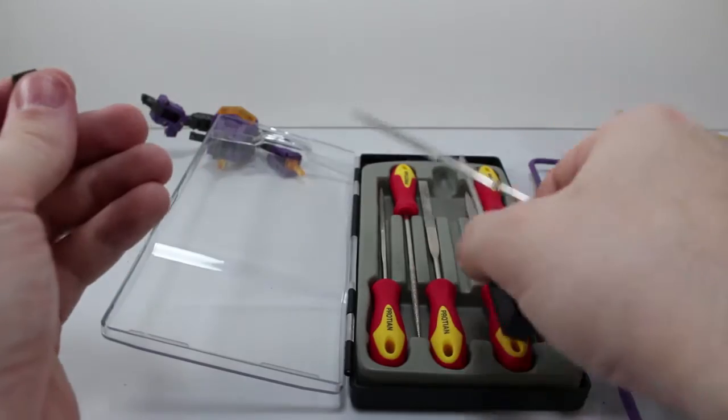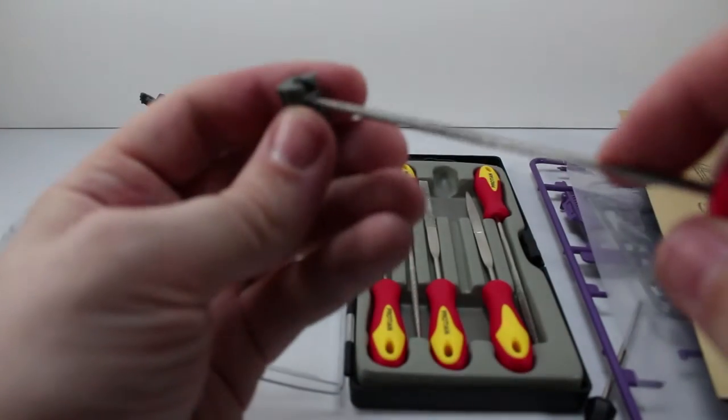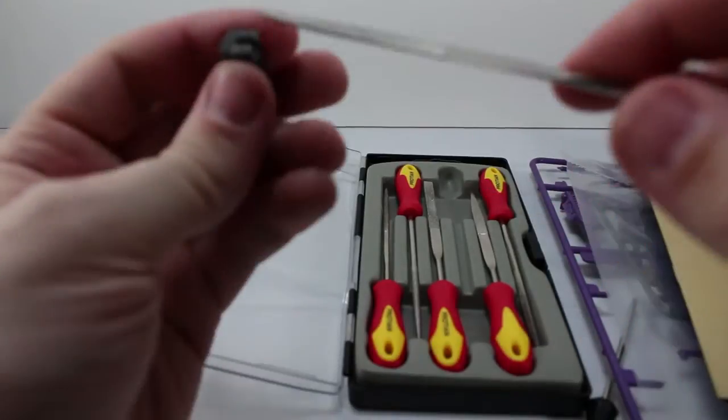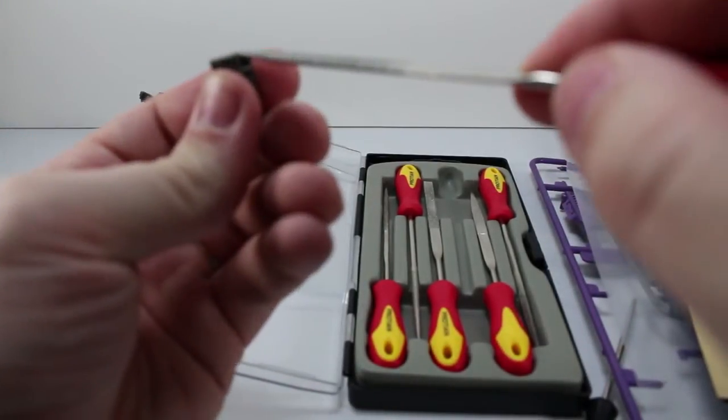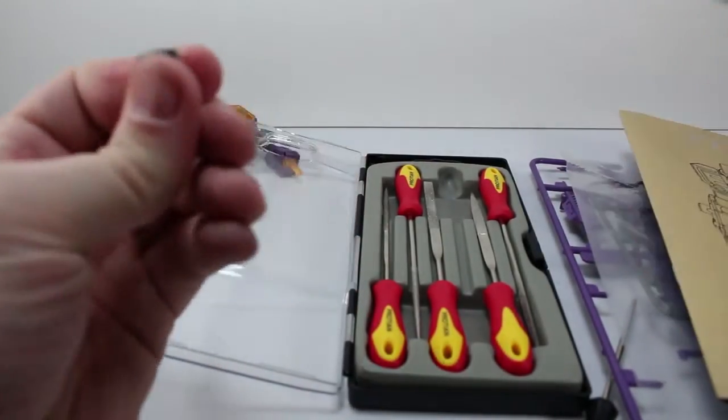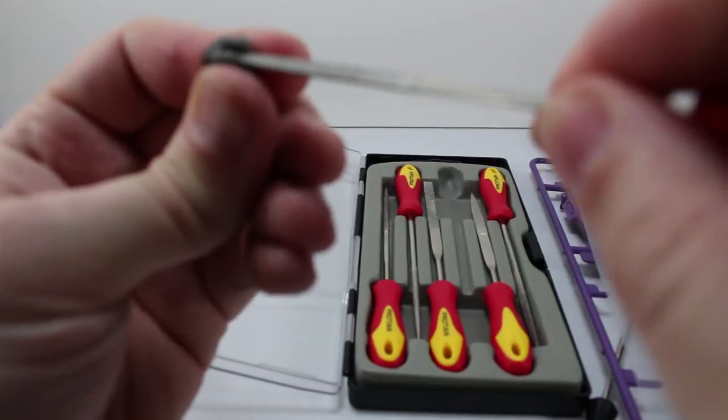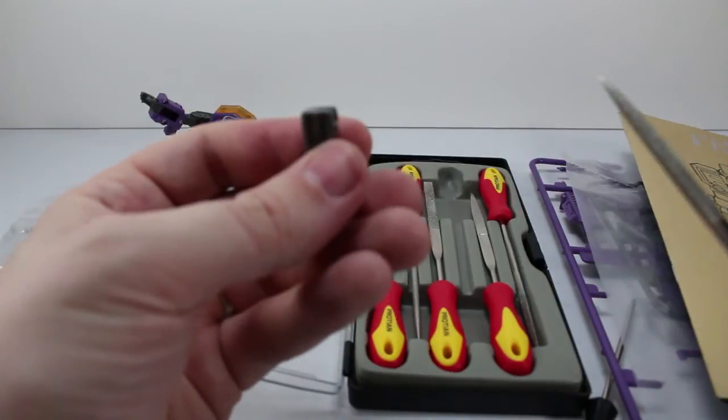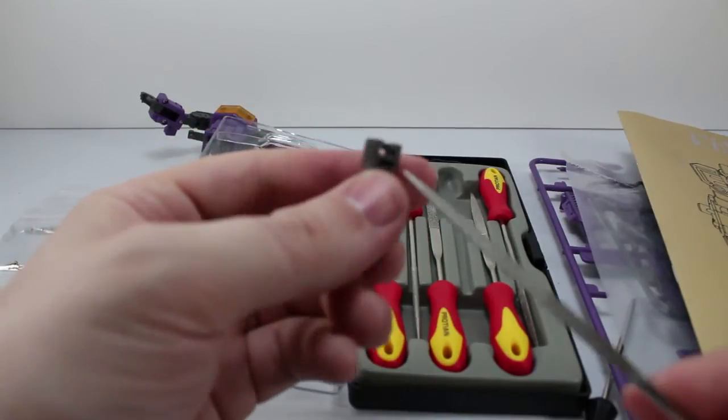The other reason it's good to get a file set like this is you never know what size file you're going to need, and these have a couple different shapes on them so you can pretty much get in anywhere. So I'm going to go ahead and file this down and then we'll start the video again and we'll put it all together.